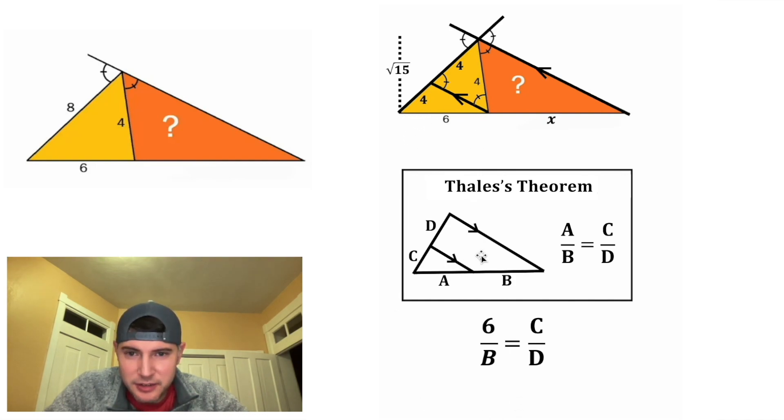A is going to be equal to 6. B is going to be equal to X. And C and D are both equal to 4. Well, the only way 6 over X is going to be equal to 4 over 4 is if X is equal to 6. So that means the base of our orange triangle is going to be equal to 6.